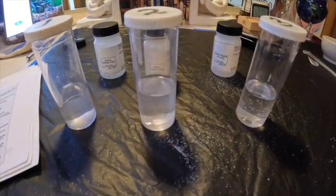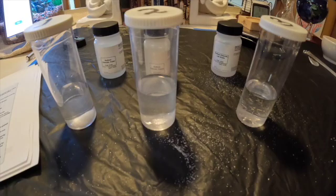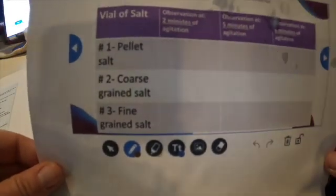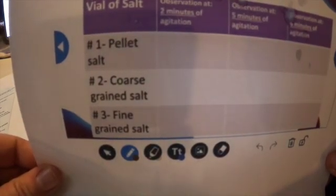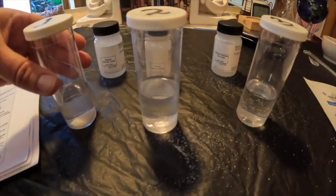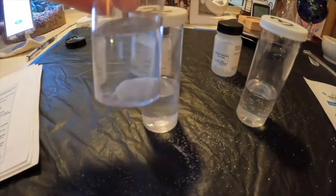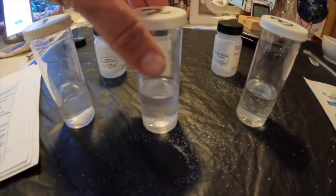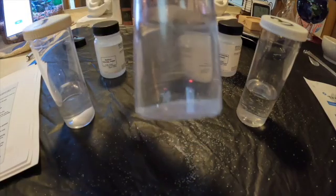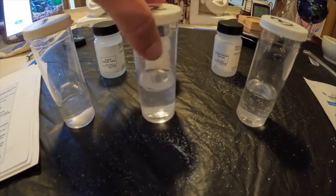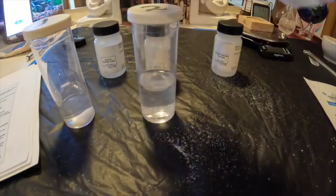It has been two minutes of agitation on the vials. We want to see our observation at two minutes, then we'll check again at five minutes and six minutes. Vial one with the pellet looks like this. Vial two with the coarse grain salt looks like this — you can still see some at the bottom. And vial three with the fine grain salt is getting pretty clear, though there is still some in the bottom.